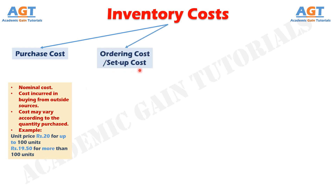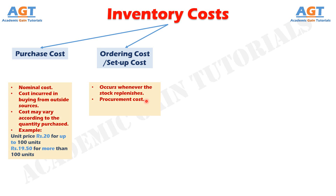Component number two is Ordering Cost or Set-Up Cost. This occurs whenever the stock replenishes. It associates with the processing and chasing the purchased order, transportation, and inspection for quality. It is also called Procurement Cost. The parallel of ordering cost when units are produced within the organization is the set-up cost, which refers to cost incurred in relation to developing production schedules. The ordering cost and set-up cost are taken to be independent of the order size, so the unit ordering and set-up cost decreases as the purchase order increases.